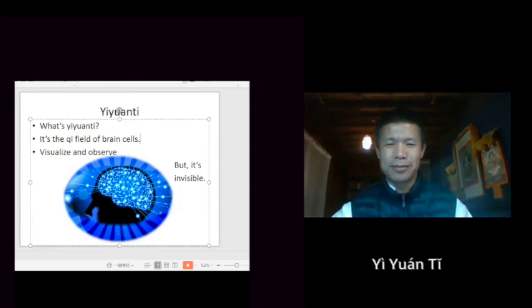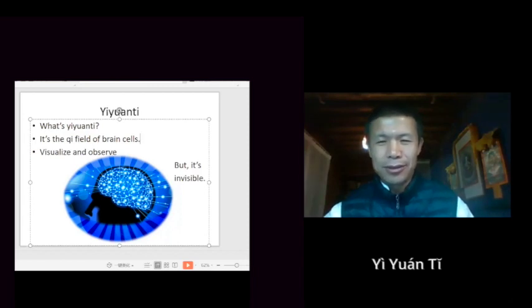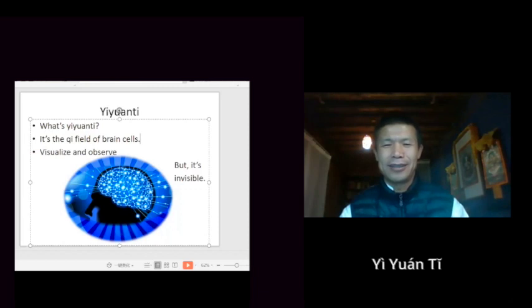Podemos llamar el campo de chi de las células cerebrales. Y ese es el campo a nivel de la información, el chi de la información. Ese campo de chi se le llama Yuan-Ti.